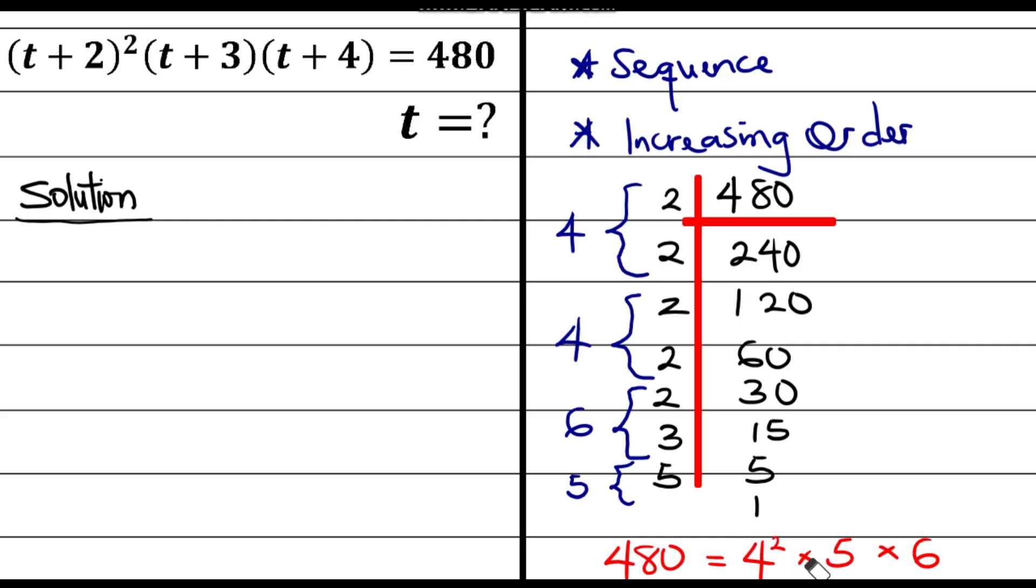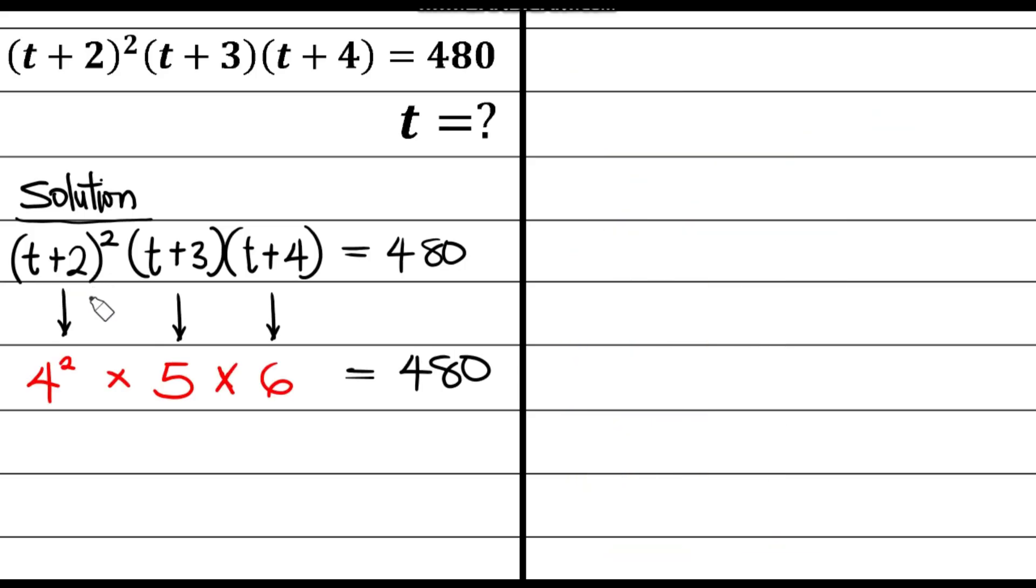Need to arrange it in ascending order. Equate my numbers, which shows that this is just 4 to the power of 2 multiplied by 5 multiplied by 6. So that at the end of the day, when I multiply them all out, I'm still going to have 480.